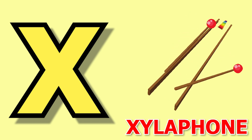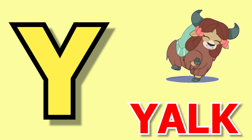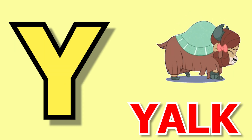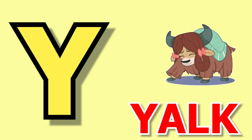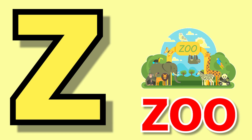X for xylophone, xylophone means swartarang. Y for yak, yak means yak. Z for zoo, zoo means shidhiya ghar.